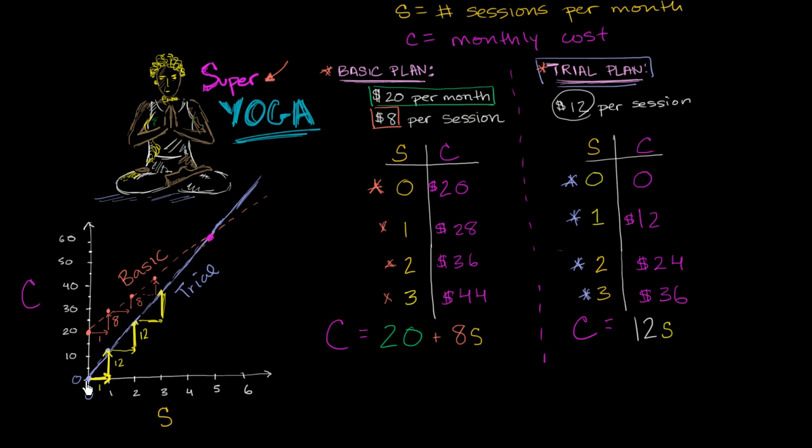The trial plan, we don't pay anything upfront. And then every time we add a session, so every time we move to the right here by one session, we add $12 to our cost. We move up by 12. Add another session, move up by 12. Add another session, you move up by 12. On the basic plan, we did have an upfront cost of $20, but the line was less steep.